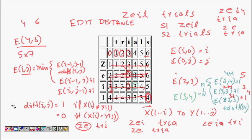The next question is: given this completed table, how do we find what operations were actually performed to convert 'zeal' to 'trials'? By looking at which choices were made at each step, we can trace back the operations. This will be covered in the next class. For now, we can at least find the minimum number of operations required to convert string s1 to string s2.